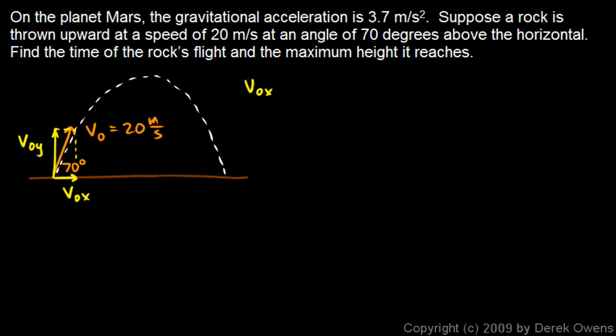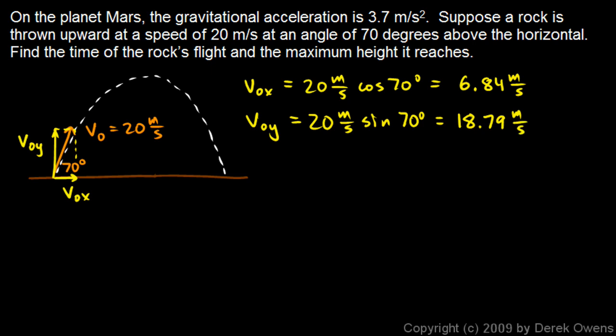And we can find those. v0x is going to be v0 times the cosine of the angle, so that's going to be 20 meters per second times the cosine of 70 degrees. And v0y will be v0 times the sine of the angle, so that will be 20 meters per second times the sine of 70 degrees. And you punch those into the calculator and make sure your calculator is set in degree mode. And you get, for the horizontal, 6.84 meters per second, and the vertical is 18.79 meters per second.